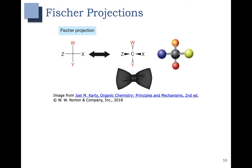A good way to remember that the horizontal lines are sticking out at you is to think of them as a bow tie. You can see the model here on the right. In this case, C is blue and X is yellow, and these are sticking out at us. W is orange and Y is red, and those groups are going back.